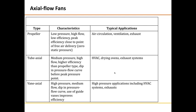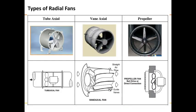We have two categories of fans: centrifugal and axial. In a centrifugal fan the direction changes from inlet to outlet, whereas in axial flow fans the direction remains the same — it flows in the same direction as the axis. This is a schematic representation of tube axial, vane axial and propeller type fans.